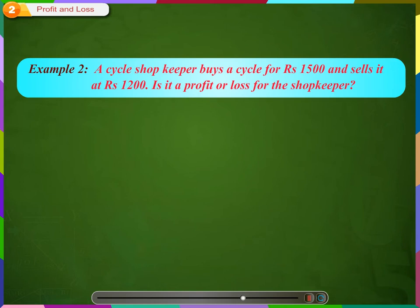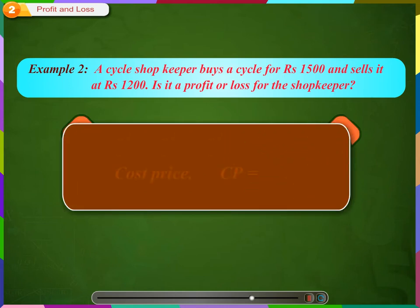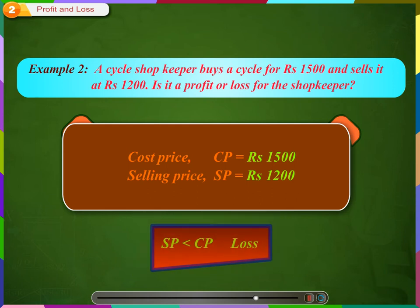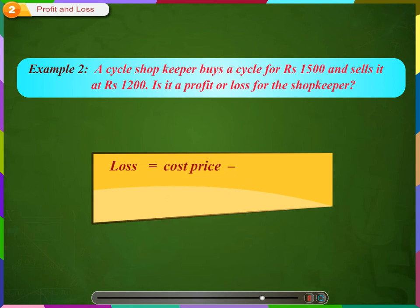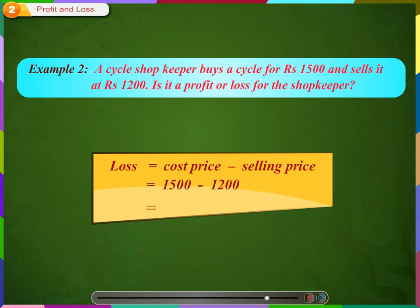Let us look at the next example. A cycle shopkeeper buys a cycle for Rs. 1500 and sells it at Rs. 1200. Is it a profit or loss for the shopkeeper? Here, the cost price is Rs. 1500 and selling price is Rs. 1200. Since the selling price is lower than the cost price, we can say it is a loss. And how much is the loss? Loss is equal to cost price minus the selling price, i.e. 1500 minus 1200, which equals 300. A loss of Rs. 300 means that the article was sold at Rs. 300 less than the cost price of the article.